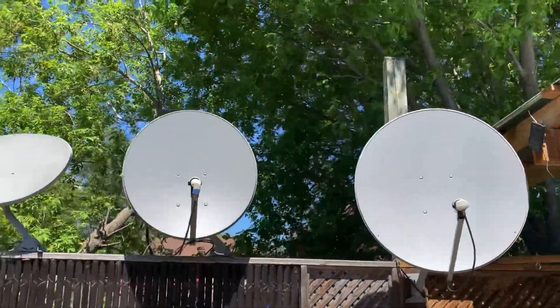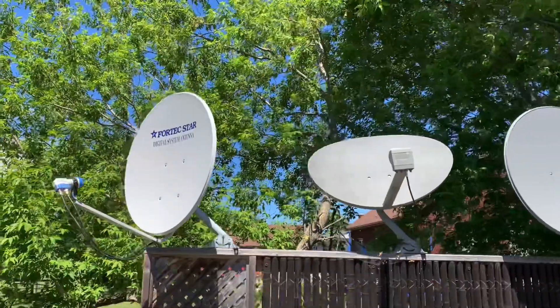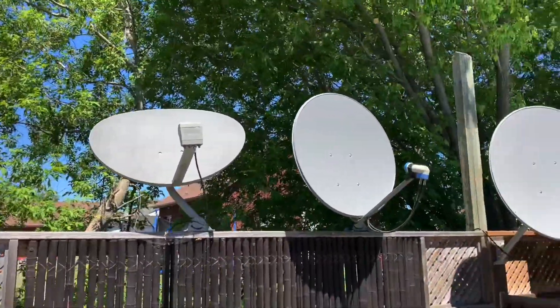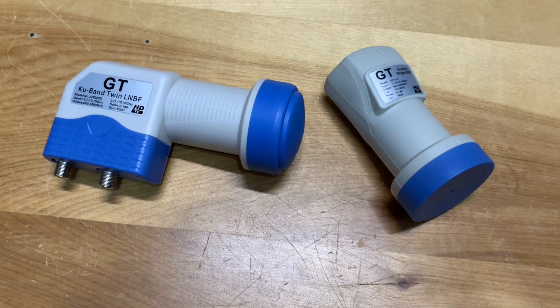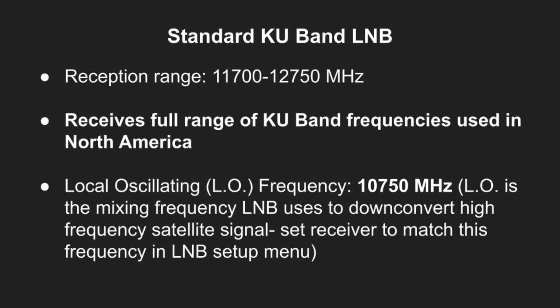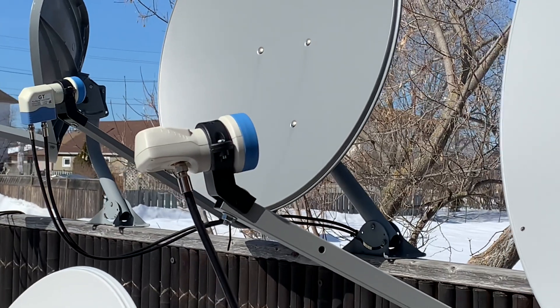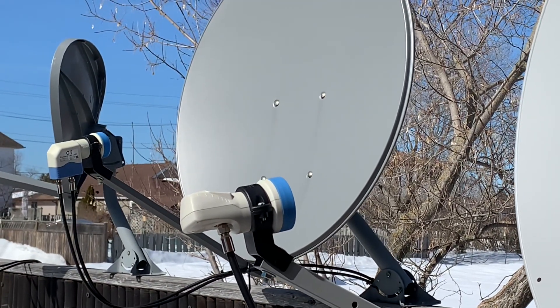Today I'd like to talk about the most common type of LNB used for KU band satellite reception in North America: the standard KU band LNB. It has a frequency reception of 11,700 to 12,750 megahertz, which is more than adequate because free satellite TV channels in North America are only broadcast between 11,700 and 12,200 megahertz. So the standard LNB more than covers that frequency range.